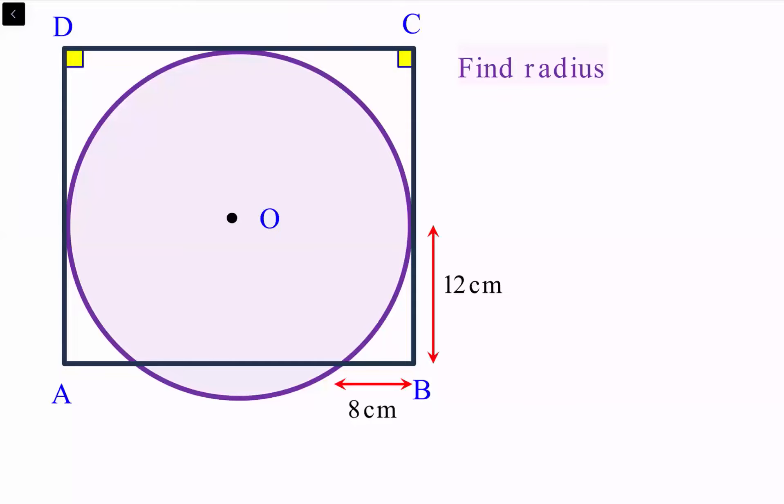This question ABCD is given as a rectangle touching the circle from three points. The length of BT is given as 12 centimeters and the length of BM is given as 8 centimeters. We have to find the radius of the circle.